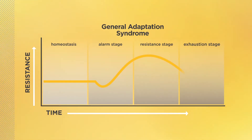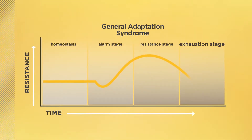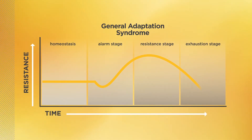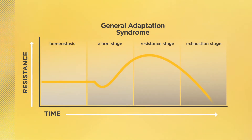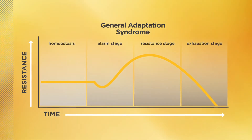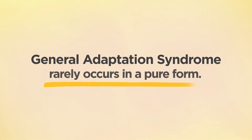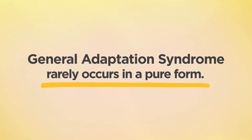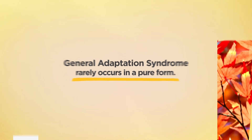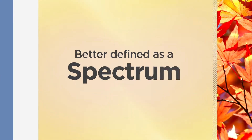The third and final stage is exhaustion. In this stage, stressors continue beyond the body's capacity and the body's resources simply can't fight anymore. It is at this stage where a person becomes more susceptible to disease and death. Although clinically defined in stages, Dr. Selye also cautioned that General Adaptation Syndrome rarely occurs in a pure form. It's complicated by underlying actions of the stressors, so is really better defined as a spectrum.